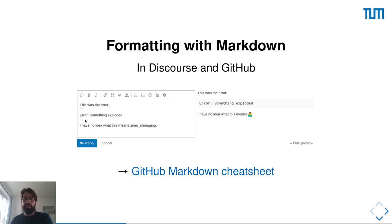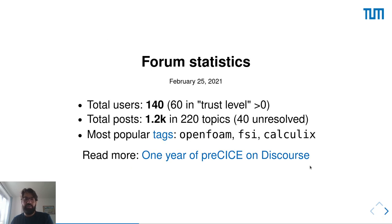If you post an error message, it would be really helpful to add three backticks before and three backticks after, because this makes it very easy for us to see what is happening compared to a raw message. You can find a link in the online slides for the GitHub version of Markdown and get more ideas there.